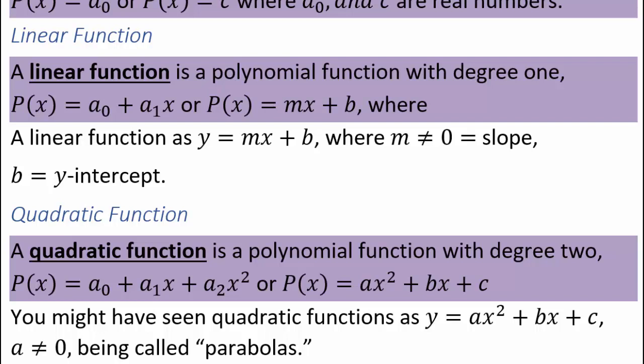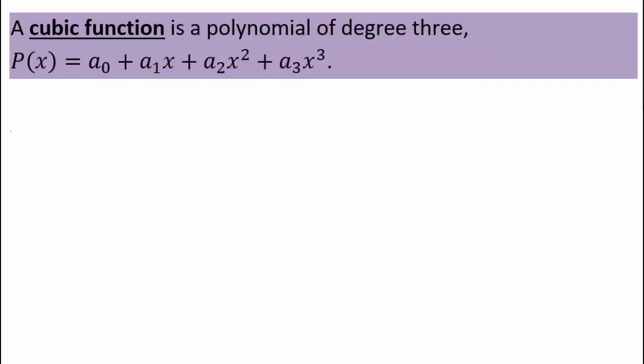The graph of this function is called a parabola. We will see those in detail a little bit later. A polynomial of degree 3 — some constant plus constant times x plus constant times x squared plus constant times x cubed — is called a cubic function.